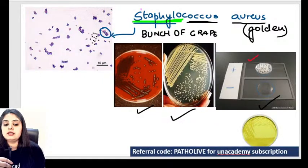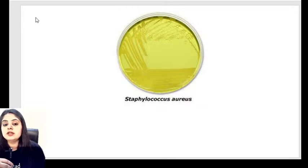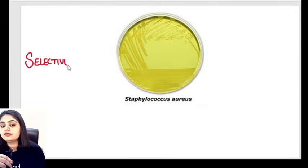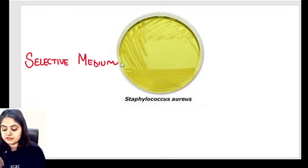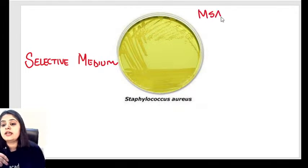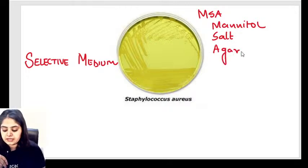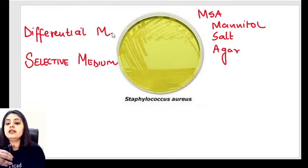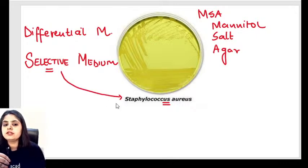The next picture shows a yellow selective medium — Mannitol Salt Agar (MSA). One answer I already gave: it's selective. Tell me its name and one more property. MSA is both a selective medium and a differential medium.